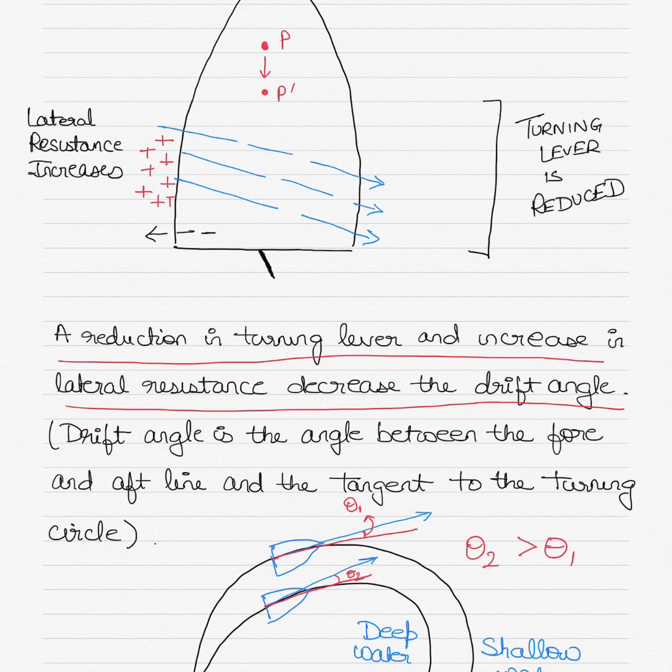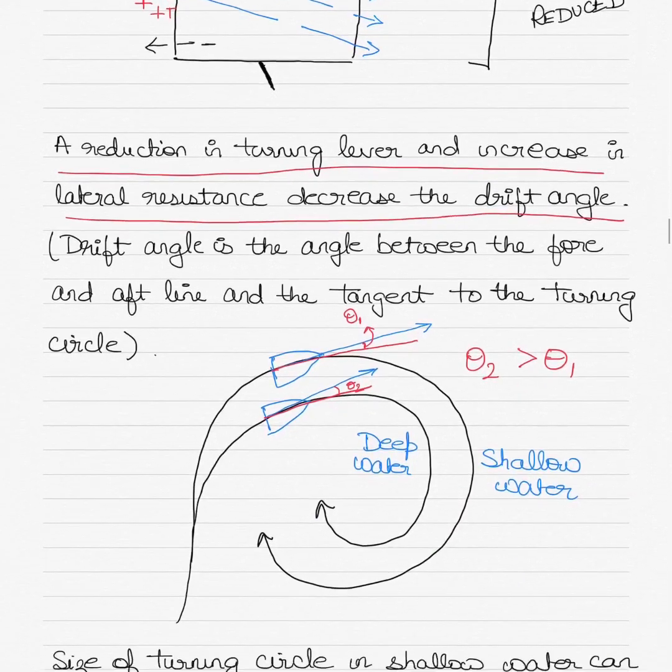The pivot point shifts aft when the lateral resistance increases aft of the turning lever. The turning lever reduces as the lateral resistance increases along the hull of the vessel. Because more water is passing along the hull, there is more lateral resistance. Hence the turning lever reduces and a combination of both increases the turning circle in shallow water.